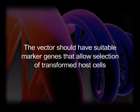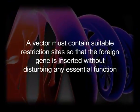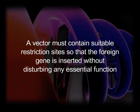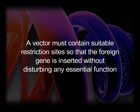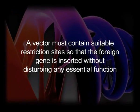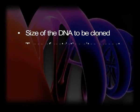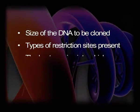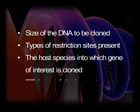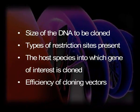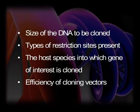Number three, the vector should have suitable marker genes or selectable markers that allow selection of transformed host cells. Number four, a vector must contain suitable restriction sites for as many restriction enzymes as possible so that the foreign gene is inserted without disturbing any essential function of the vector. In gene cloning, the choice of a vector depends upon the size of the DNA to be cloned, the types of restriction sites present, the host species into which the gene is cloned, and the efficiency of cloning — that is, the number of copies of a vector in a host cell.